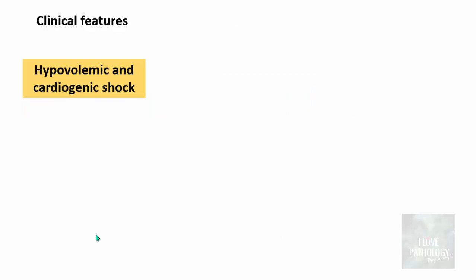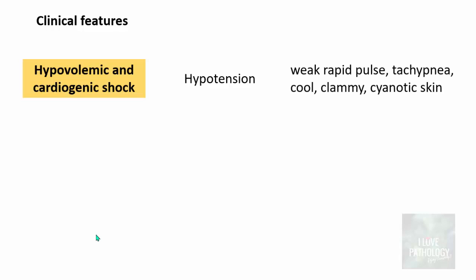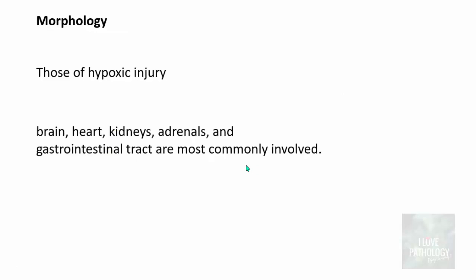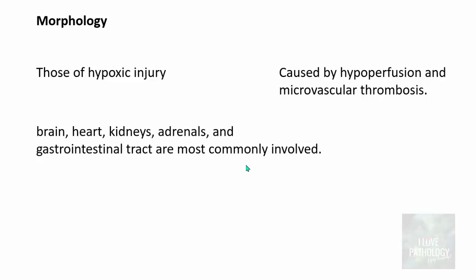The clinical features depend upon the stage of shock. In hypovolemic and cardiogenic shock there will be profound hypotension manifested by weak rapid pulse, tachypnea, and cool, clammy, cyanotic skin — remember it is cool skin. Whereas in septic shock the skin will be warm and flushed because of peripheral vasodilatation. The morphology of shock is basically due to hypoxic injury caused by hypoperfusion and microvascular thrombosis.